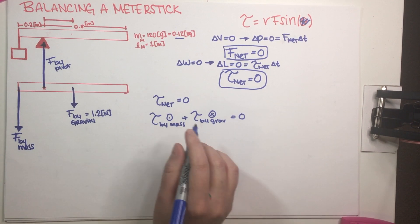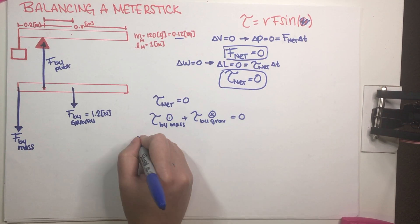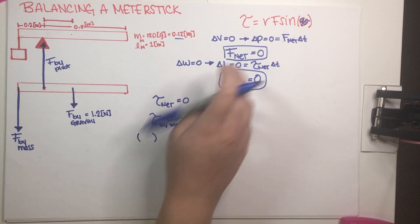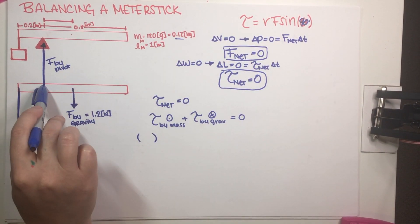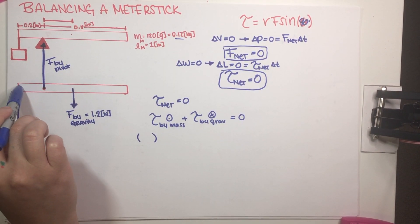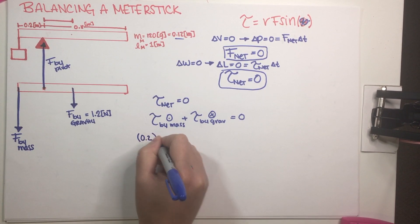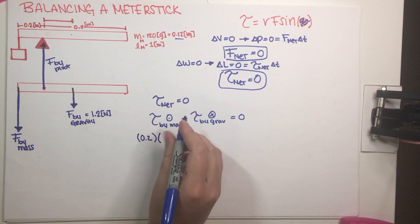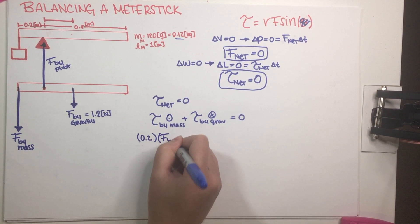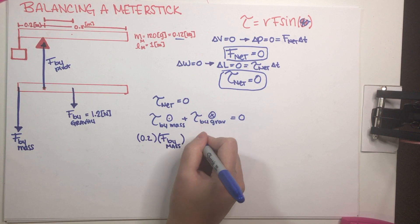So torque by mass is equal to R, which R is just the distance from the pivot point to this mass, so that would be 0.2 meters times force by mass, which we don't know, but we're trying to figure it out.